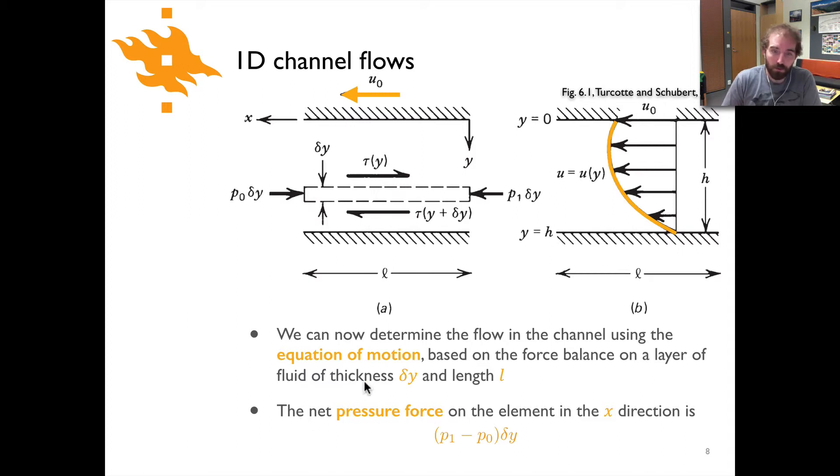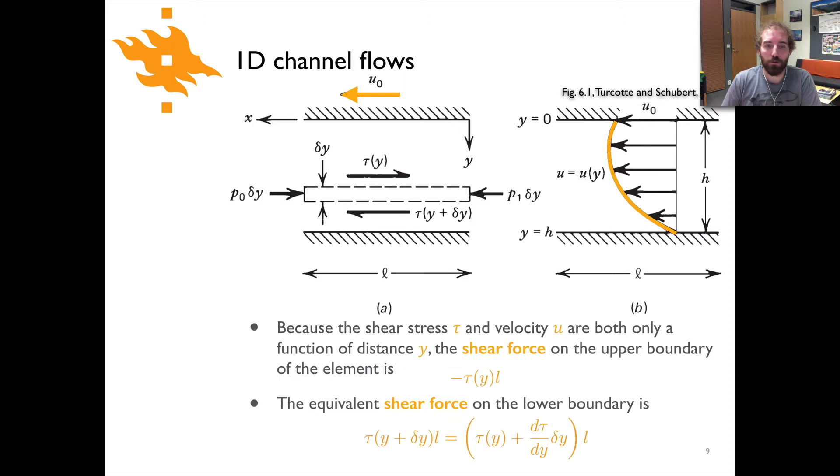The first of the forces would be a pressure force acting on this little box along the x direction. The pressure here is indicated with an arrow going parallel to the x-axis. At one end we have a pressure of p0 times delta y, the thickness of this piece of fluid, and at the other end we have p1 times delta y. So the difference in pressure is simply p1 minus p0 times delta y. That's our pressure difference across this little piece of the fluid.